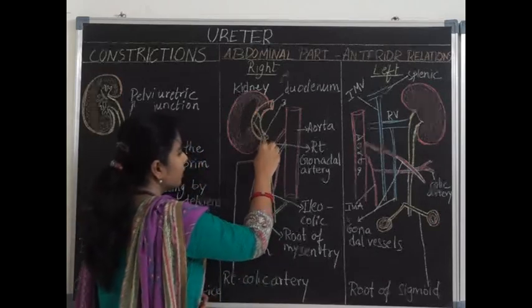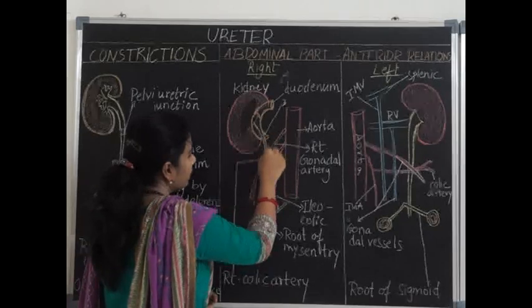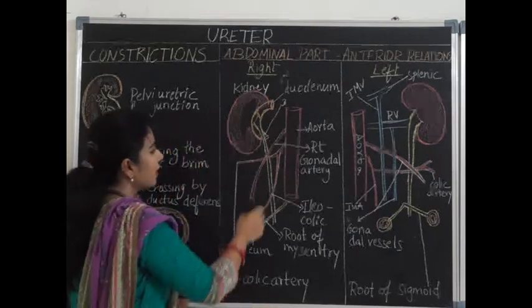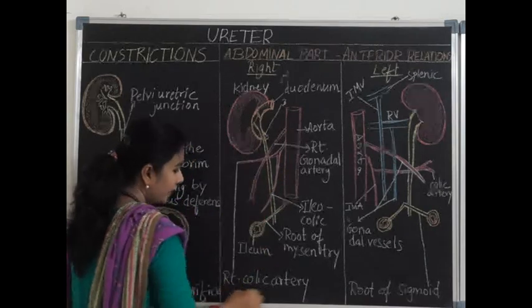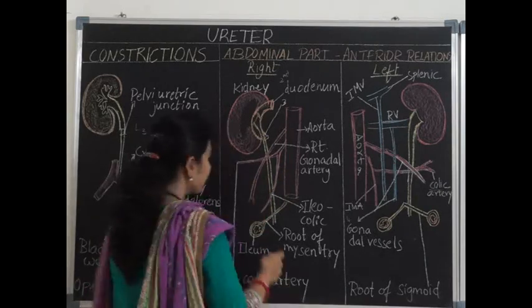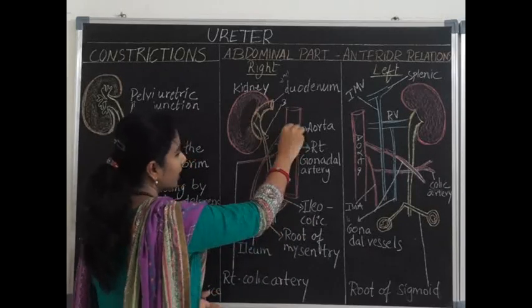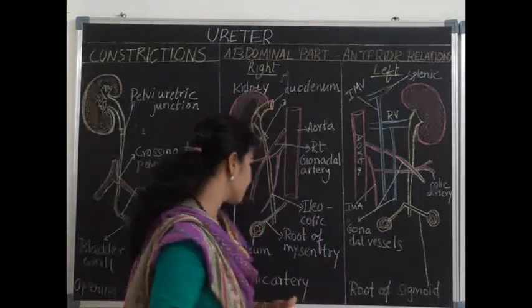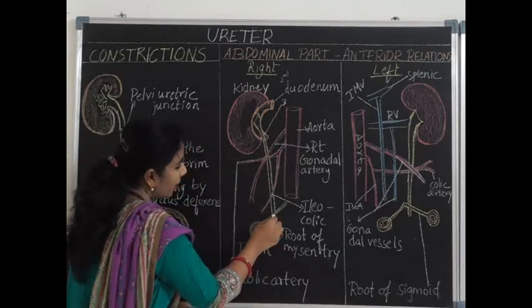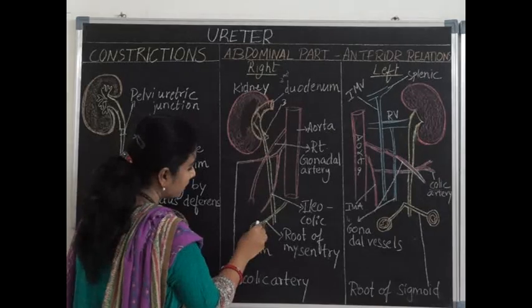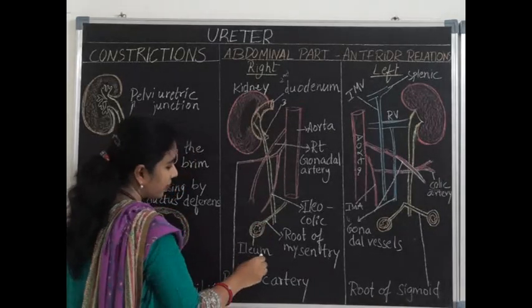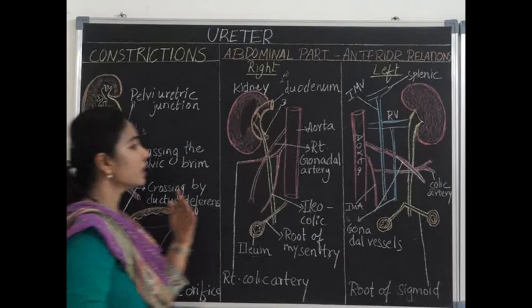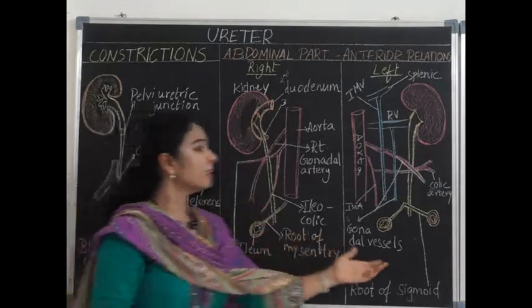That is, the urinary tract — the ureter — lies below the gonadal artery. The ureter is also crossed by the right colic artery, which supplies the ascending colon, and the ileocolic artery — both branches of the superior mesenteric artery. The ileocolic artery supplies the terminal ileum, cecum, and appendix. In its lower abdominal part, the ureter is also crossed by the root of the mesentery, which covers the terminal ileum.